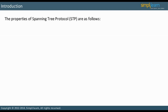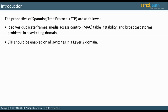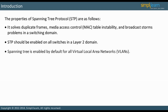STP solves three interrelated problems in a switching domain. When there are bridging loops, duplicate frames can occur, which leads to MAC table instability. This can cause broadcast storms, which may disable a network. Always enable STP on all switches in a layer 2 domain. If STP is disabled, bridging loops are not detected and prevented. Spanning tree is enabled by default for all virtual local area networks.